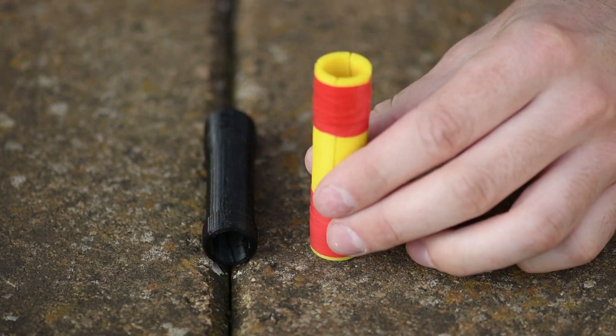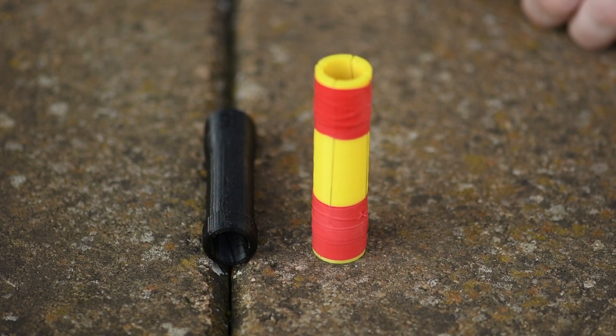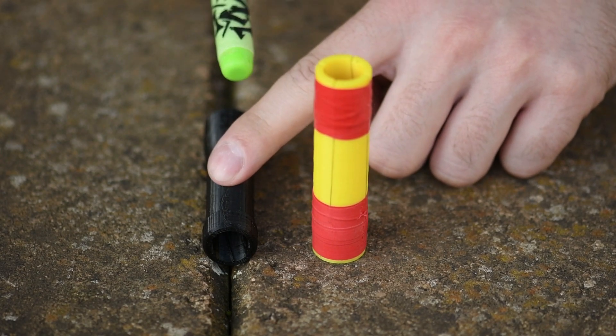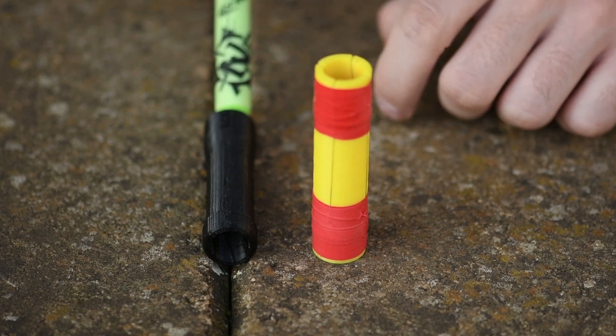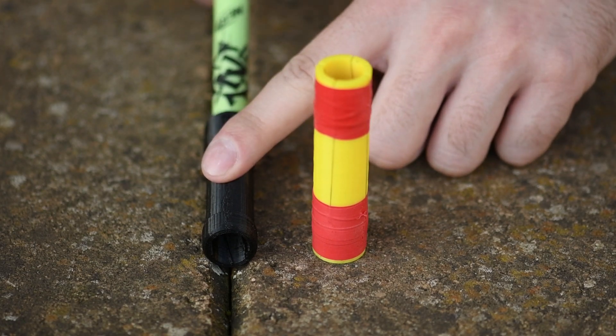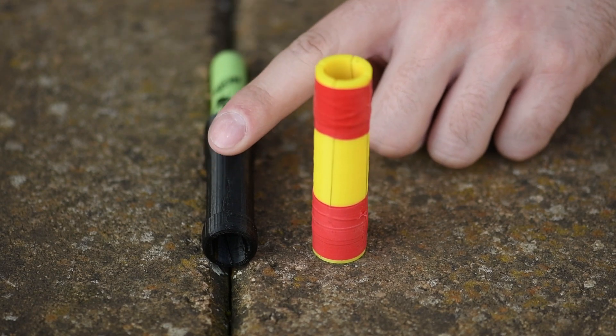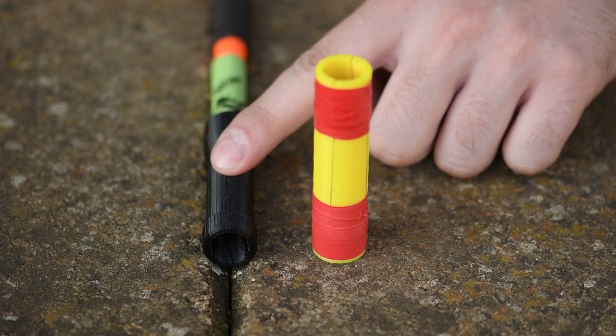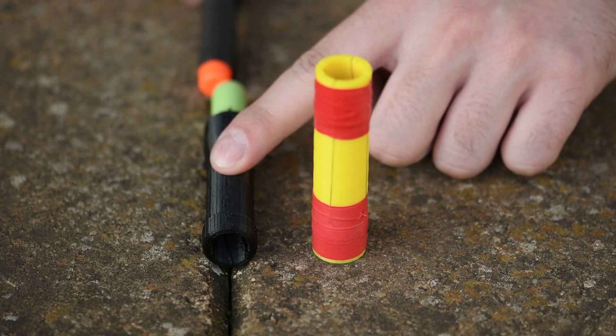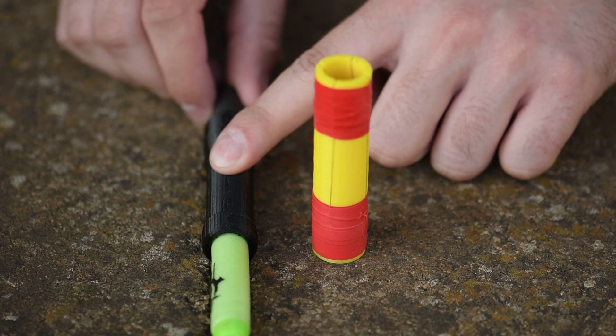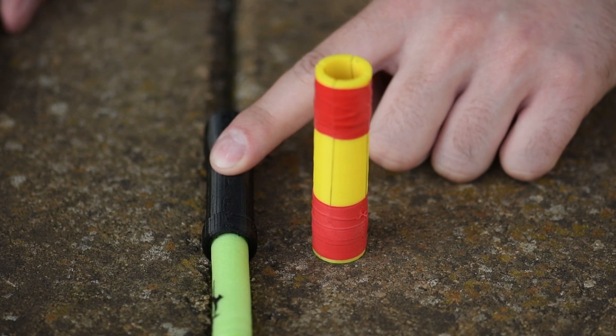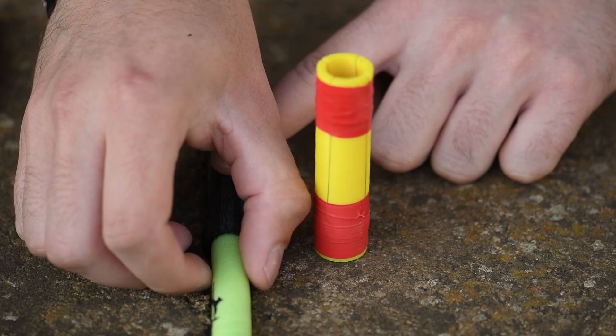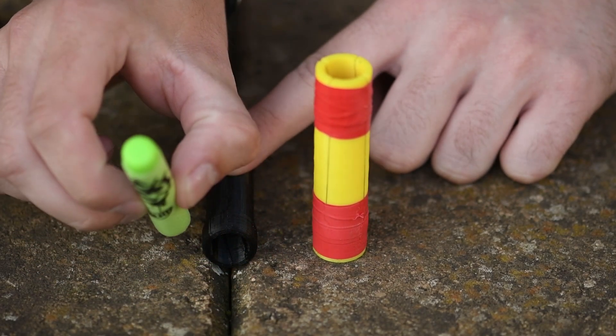And now I'll try the rifled barrel. First up the loose fitting zombie strike elite dart, positioning the zombie strike logo straight upwards again. As I push it through you can see it's rotated less than 180 degrees, this is about 160.